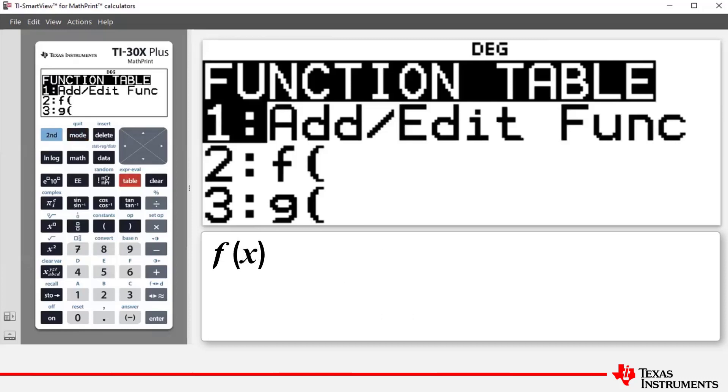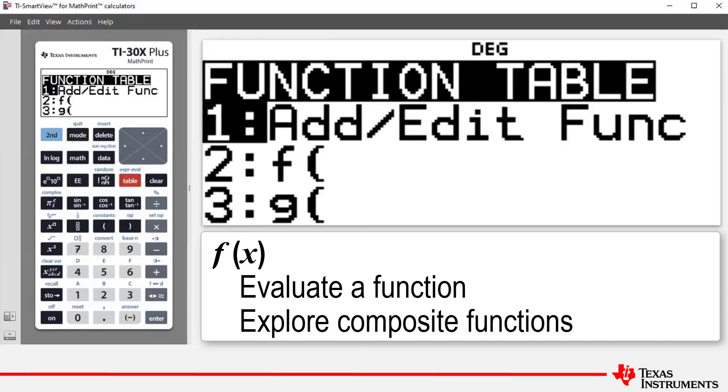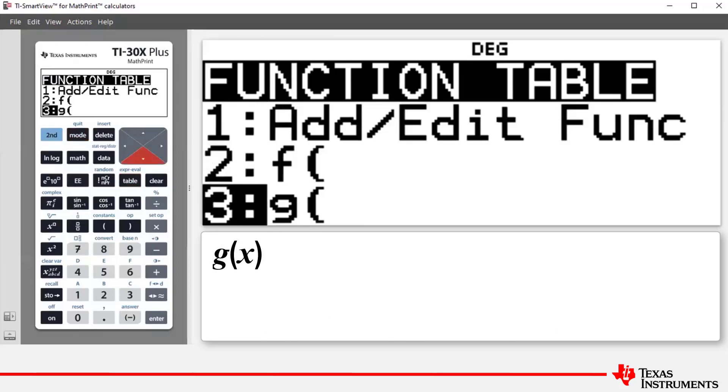Number two is f open bracket that allows you to evaluate a function f at a particular x value on the home screen. g open bracket allows you to evaluate function g at a particular x value on the home screen.